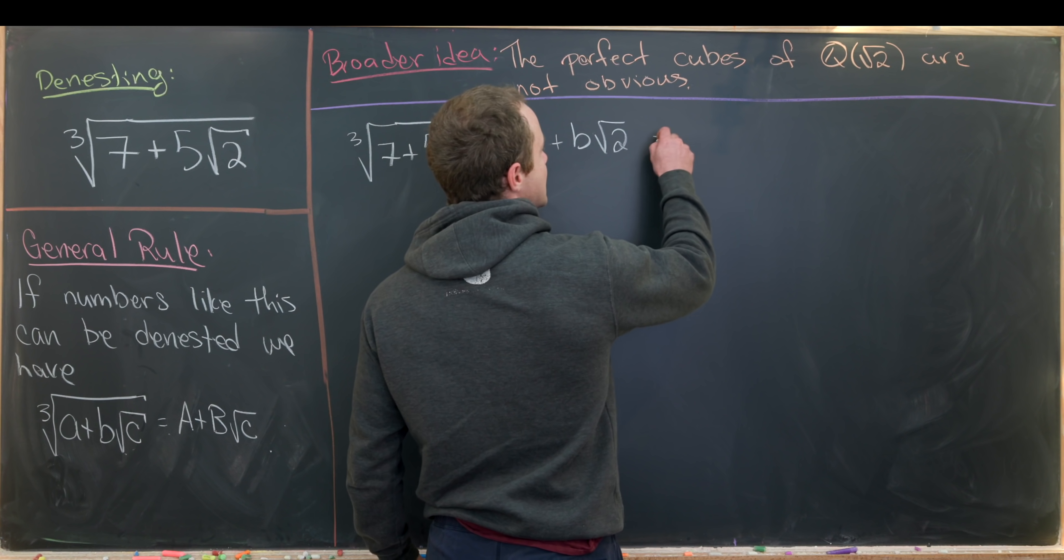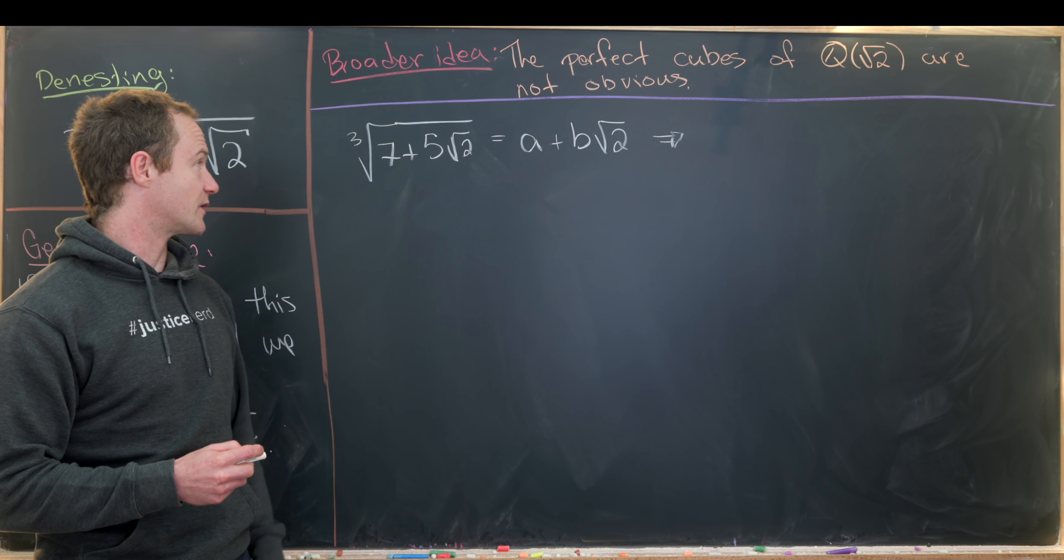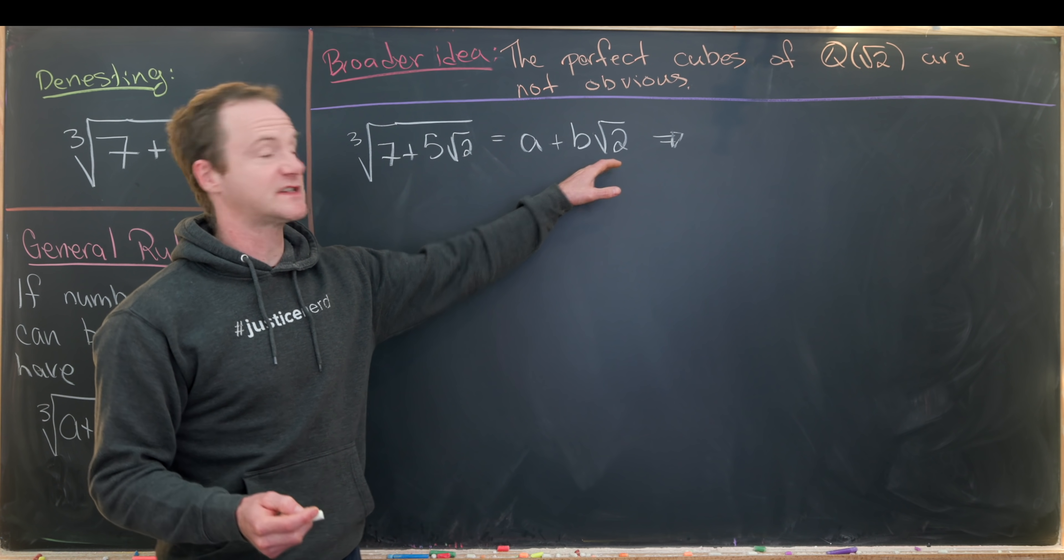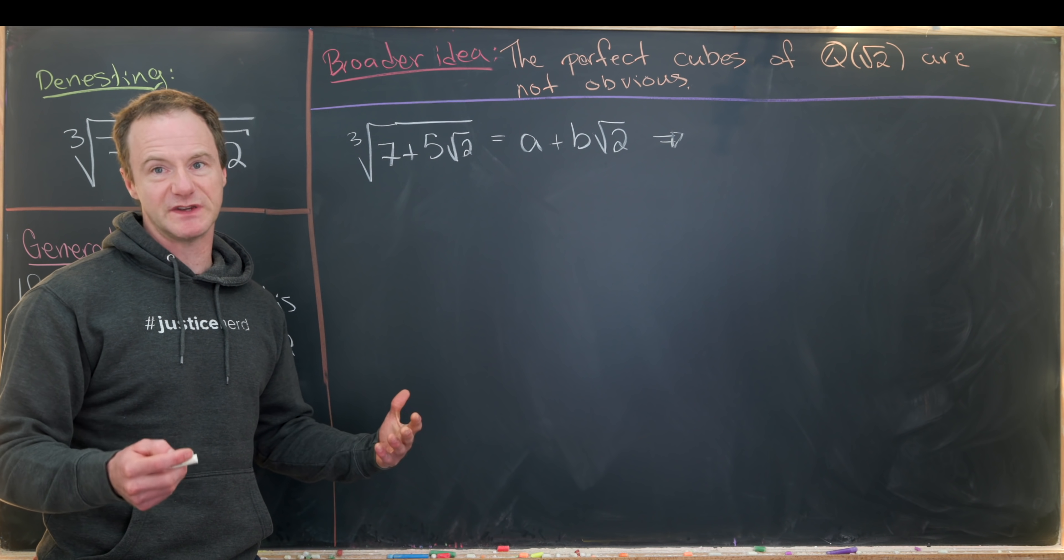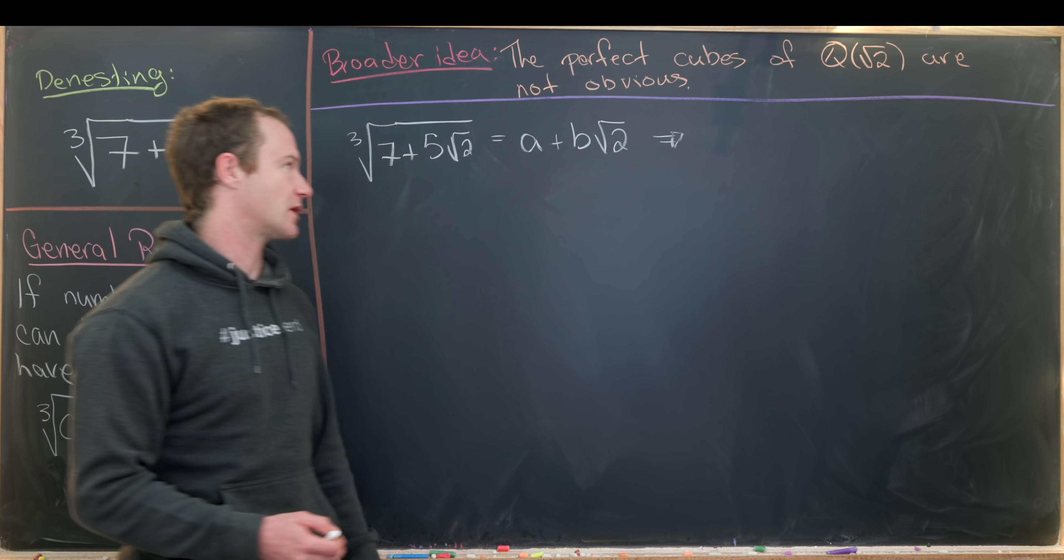Okay so anyway now we're going to cube both sides of this equation so that we can get rid of this cube root. But then notice when we cube we'll still only have a square root of two term. That's because when we square it we just have two and when we cube it we have two times the square root of two.